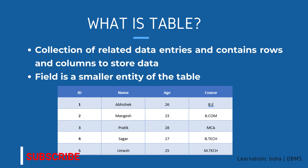Let's see the example of a student table. It has 5 rows and 4 columns. A field is a smaller entity of the table which contains specific information about every record in the table. In the above example, the fields in the student table consist of ID, name, age, and course.